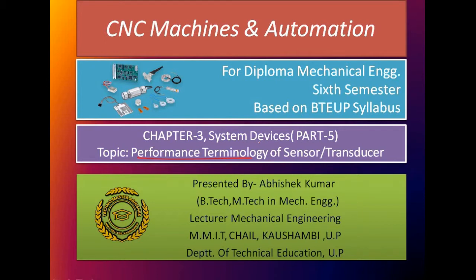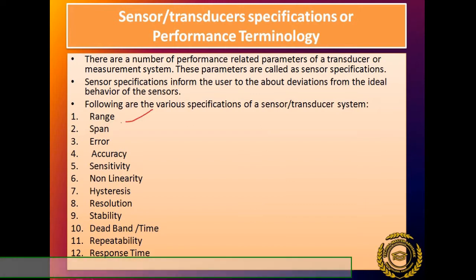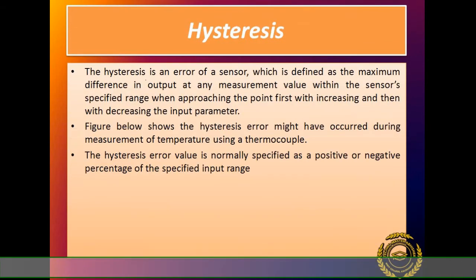Let's start without wasting any time. In the previous video we already discussed: range, span, error, accuracy, sensitivity, and non-linearity. Now we will discuss performance terminologies 7 to 12. So first we will discuss hysteresis.